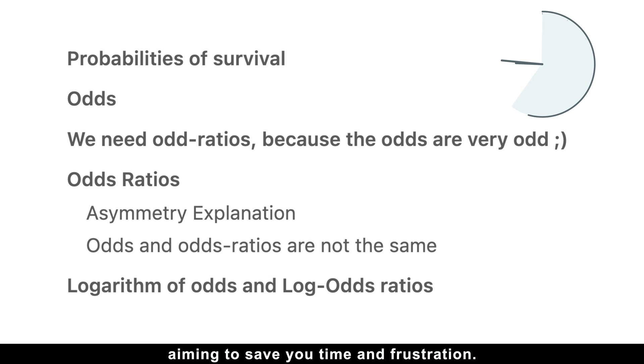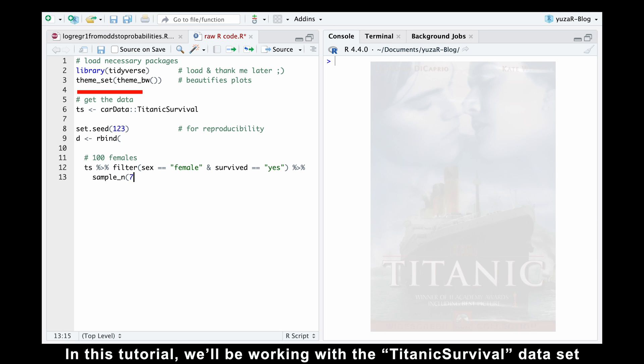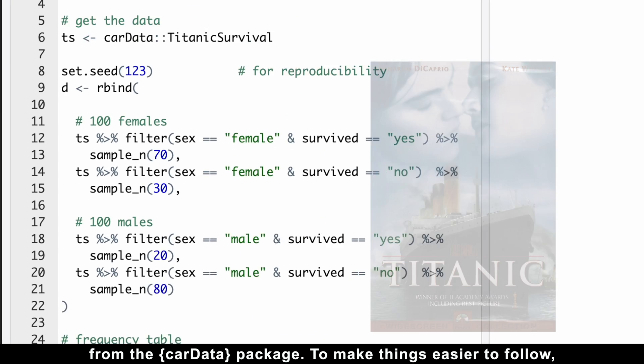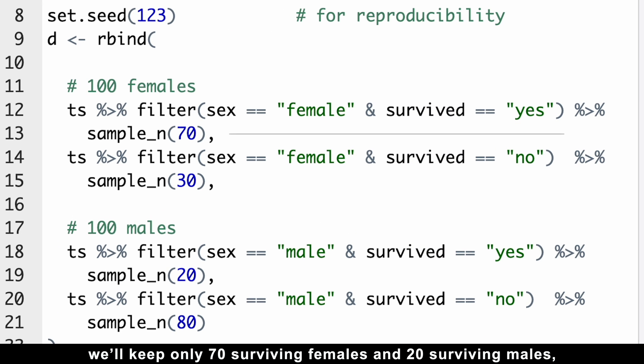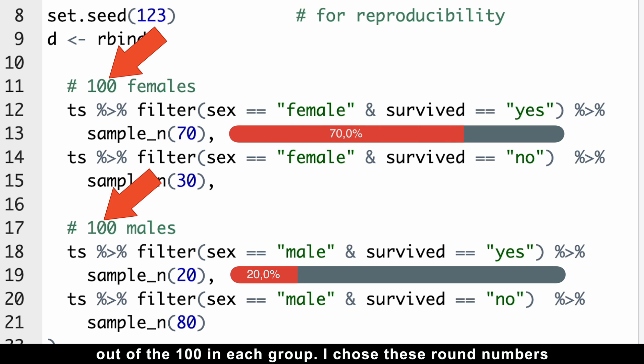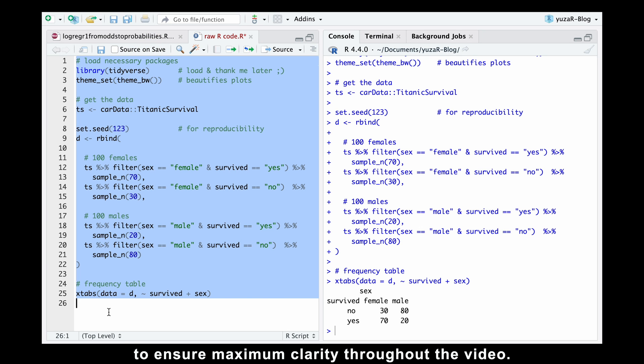So in this video, we'll dive into these essentials, aiming to save you some time and frustration. In this tutorial, we'll be working with the Titanic survival dataset from the car data package. To make things easier to follow, we'll keep only 70 surviving females and 20 surviving males out of the 100 in each group. I chose these round numbers to ensure maximum clarity throughout the whole video.